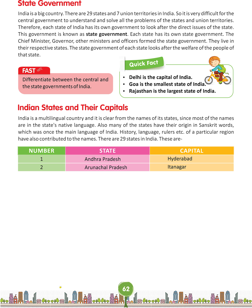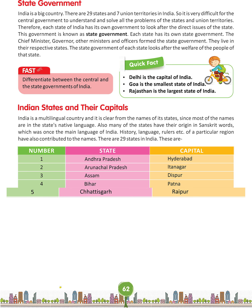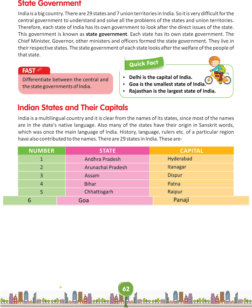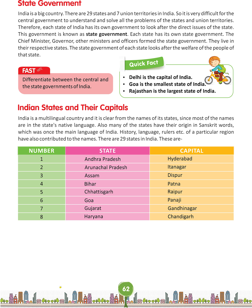Third: Assam — Dispur. Fourth: Bihar — Patna. Fifth: Chhattisgarh — Raipur. Sixth: Goa — Panaji. Seventh: Gujarat — Gandhinagar. Eighth: Haryana — Chandigarh.